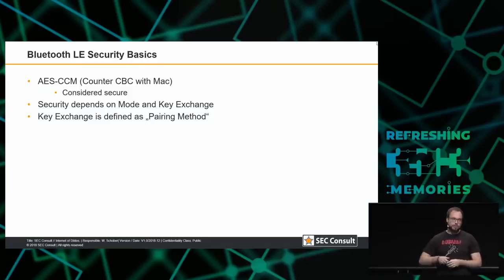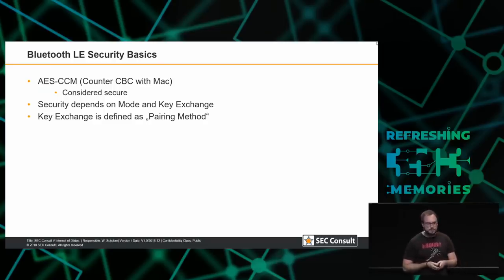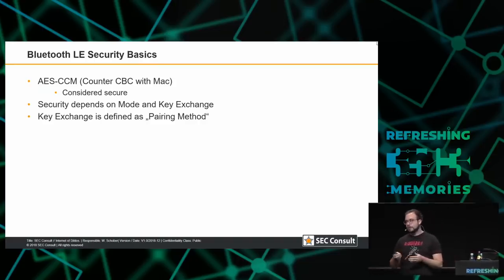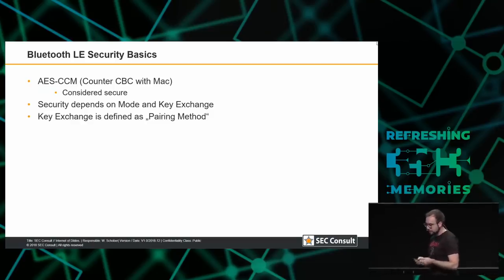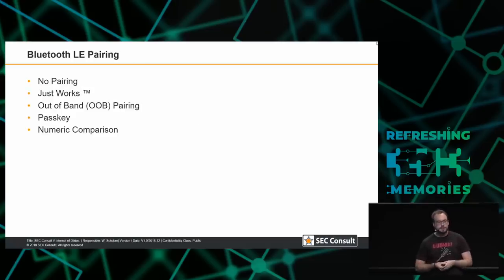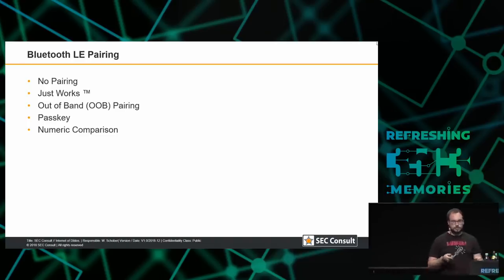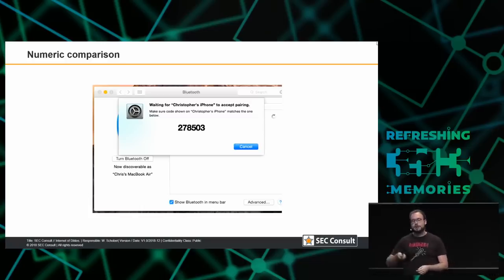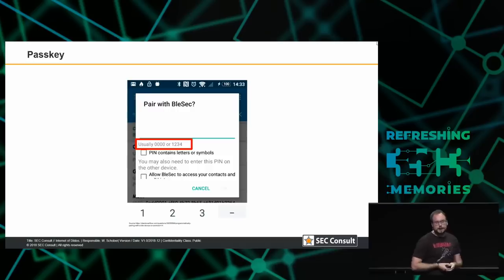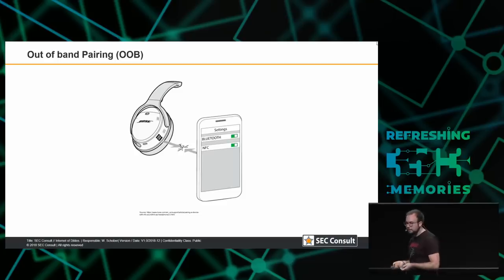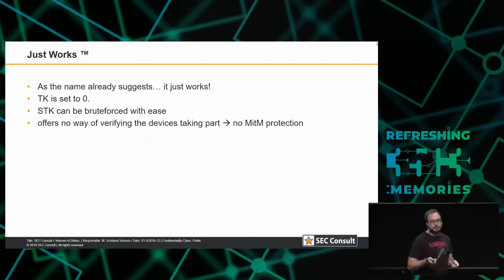For the security basics: Bluetooth Low Energy uses ASCCM — Counter-CBC with MAC — which is considered secure. But as we know, security depends on the key material and key exchange, and for Bluetooth Low Energy the key exchange is defined by the pairing methods. There are five: no pairing (we just throw packets into the air); just works; out-of-band pairing; passkey; and numeric comparison. With just works the key is set to 0 and can of course be brute-forced. With out-of-band, the key material is exchanged via NFC for example.